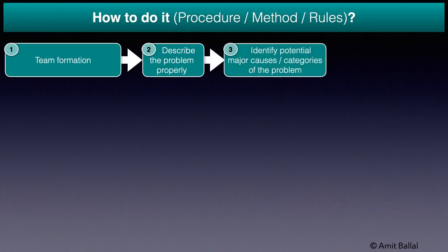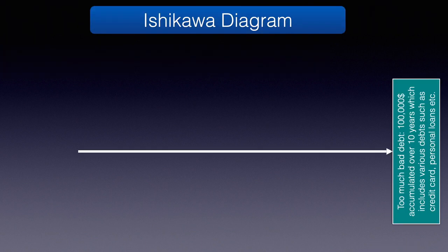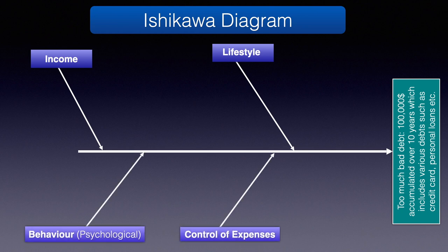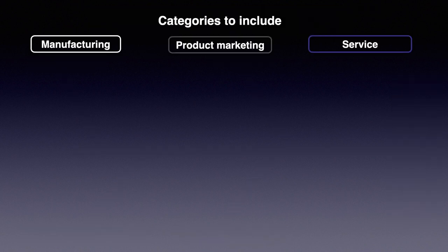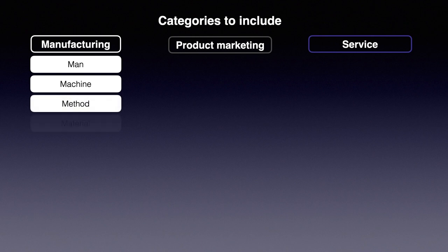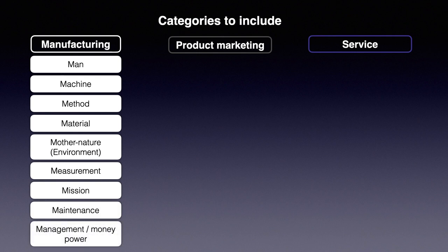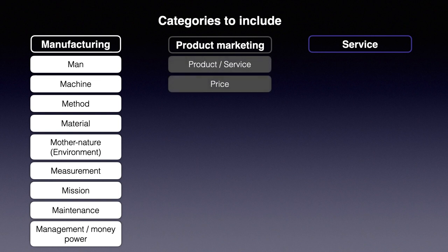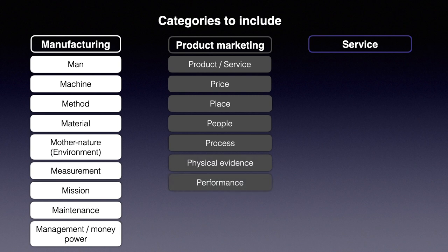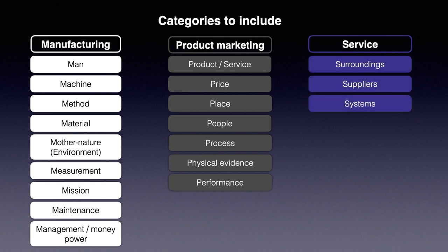Step 3: Identify the major categories or causes to brainstorm on. For the debt problem, we identified income, lifestyle, behavior, and control of expenses as categories. In the manufacturing field, categories such as Man, Machine, Method, Material, Mother Nature, Measurement, Mission, Maintenance, Management, or Money Power are generally taken. In product marketing related problems, categories such as Product or Service, Price, Place, People, Control, Process, Physical Evidence, and Performance are taken. In the service sector, categories such as Surroundings, Suppliers, Systems, and Skill are taken. These are examples and are not exclusive to any specific sector.